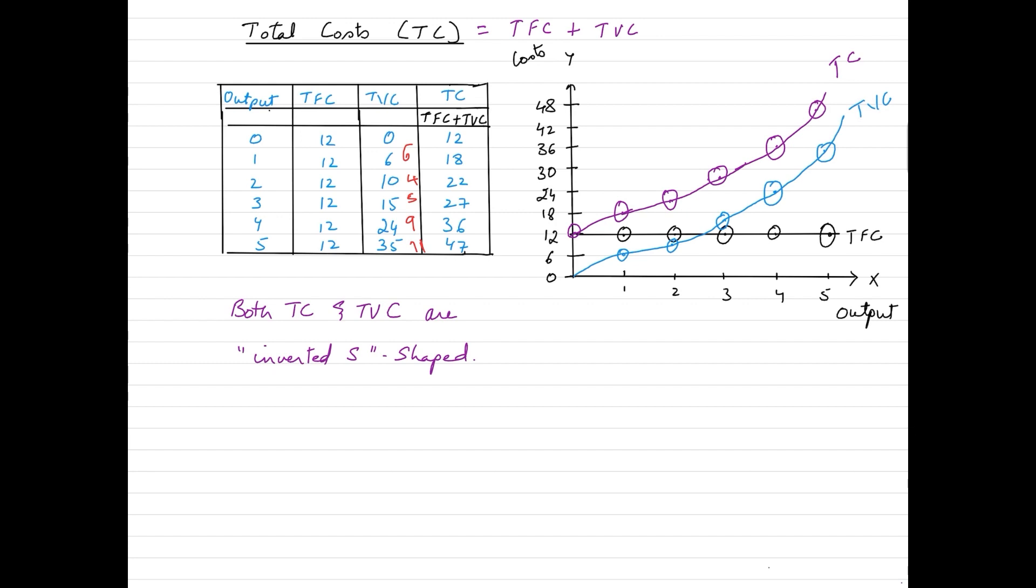Now TC tends to take the same shape as TVC because technically it is the variable cost which is affecting TC to a greater extent. Variable cost is the one which is changing and fixed cost is the one which is constant.